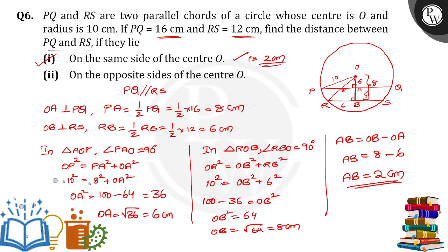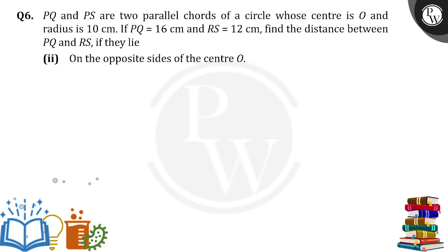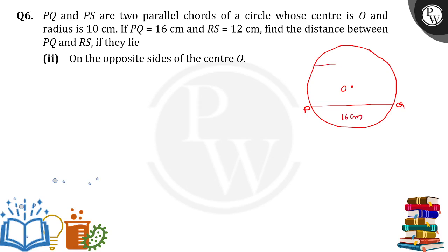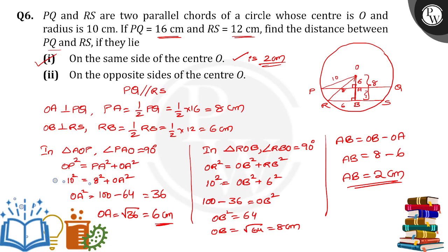Now we have to find the distance when the chords are on opposite sides of center O. Let's suppose this is the circle, with center O. PQ is on one side with PQ = 16 centimeters, and RS is on the other side. If I draw OA perpendicular to PQ, OP is the radius = 10, and PA = half of PQ = 8 centimeters. From the previous calculation, OA = 6 centimeters.